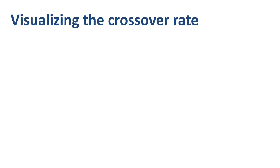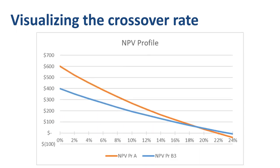It's easier to grasp this when we visualize the NPV profile and crossover rate in a graph. Discount rate is on the horizontal axis; net present value is on the vertical axis. The NPV of project A as a function of the discount rate is shown as an orange line; project B as a blue line. For both projects, the higher the discount rate, the lower the net present value. The NPV of project A is much higher than that of project B at low discount rates, making project A the preferred choice.